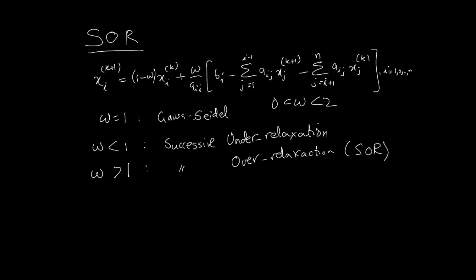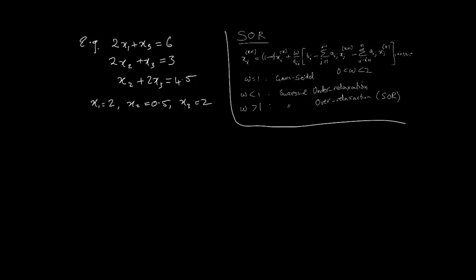It may help get it to convergence faster, that's what this is actually used for. Usually the value of omega that is optimal is different for different systems. So here's an example of SOR.